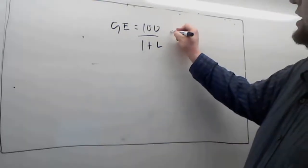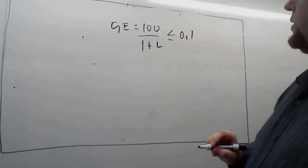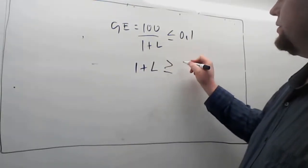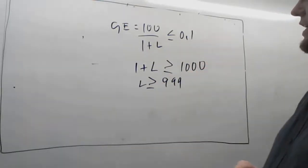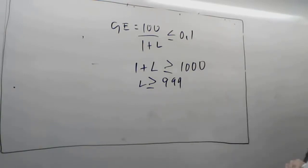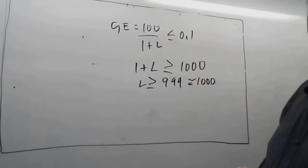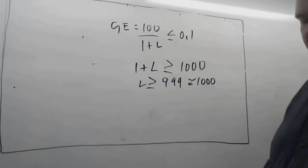Our gain error is 100/(1+L), and we want this to be less than or equal to 0.1. So 1 plus L has to be greater than or equal to 1,000, meaning L has to be greater than or equal to 999. We'll say we pretty much need a loop gain of 1,000 to get a gain error of less than 0.1% in an op-amp system.